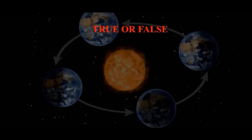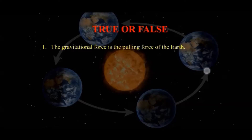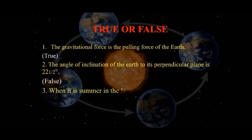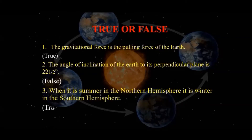Let's see which of these statements are true or false. The gravitational force is the pulling force of the Earth — yes, true. The angle of inclination of the Earth to its perpendicular plane is 23.5 degrees — this one is false. When it is summer in the northern hemisphere, it is winter in the southern hemisphere — yes, this is true. This is because of the tilted nature of the Earth's axis.